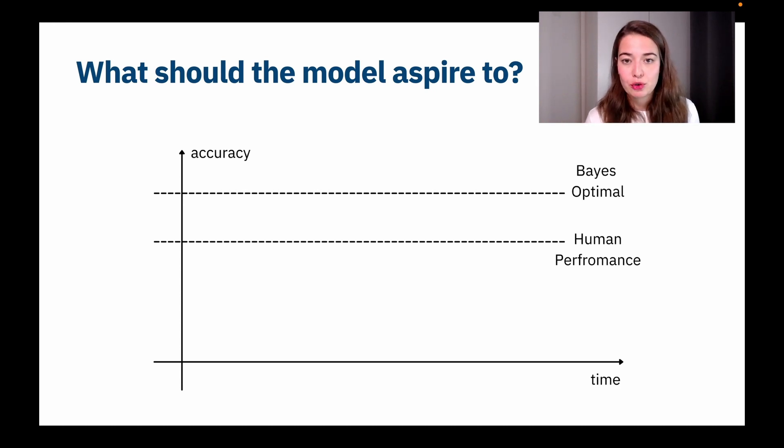So we talked about human level performance, but I want to take a bit more time to really tell you what human level performance is. Basically, when you're building machine learning models, you're trying to reach a level that is usable, right?